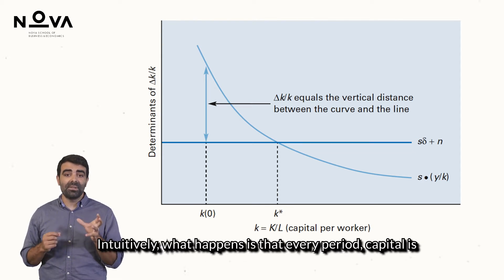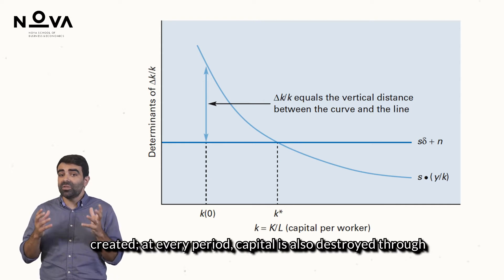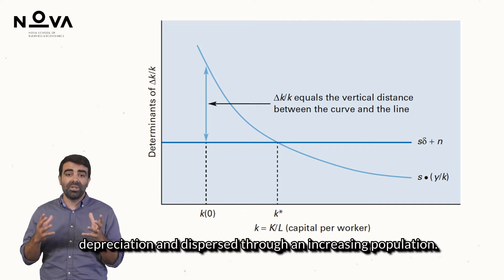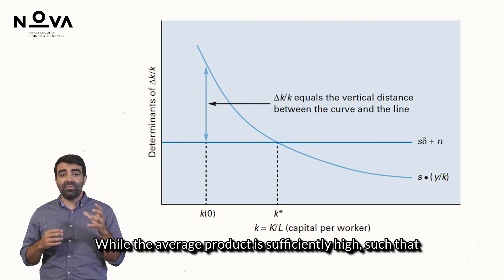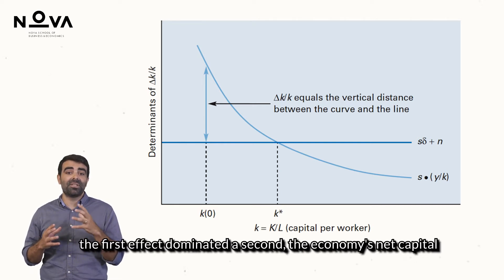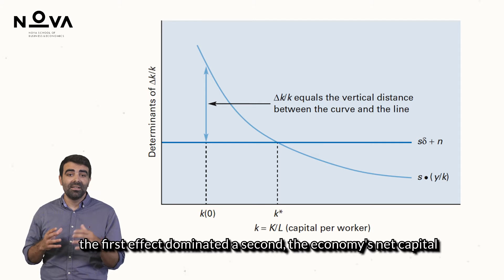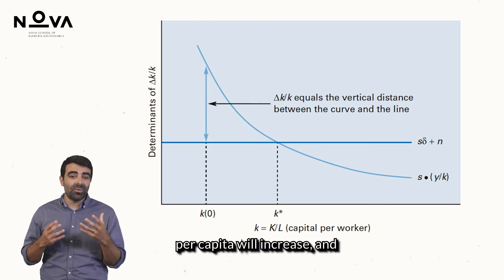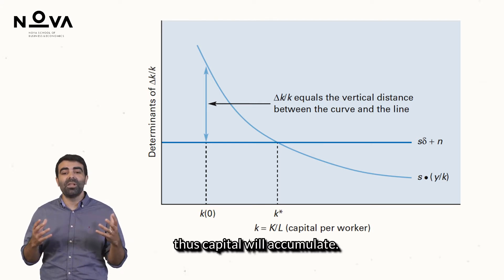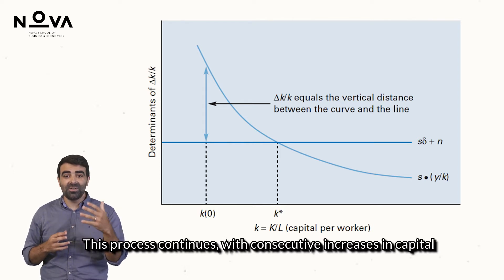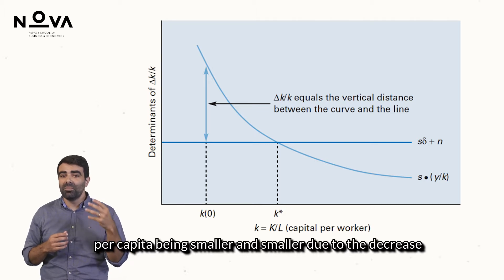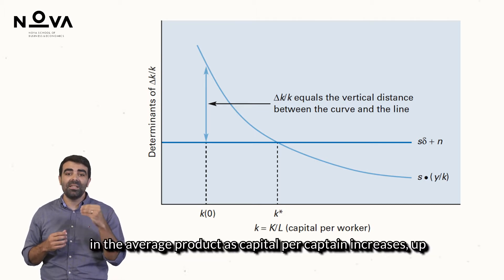Intuitively, what happens is that every period capital is created. At every period capital is also destroyed through depreciation and dispersed through an increasing population. While the average product is sufficiently high, such that the first effect dominates the second, the economy's net capital per capita will increase and thus capital will accumulate. This process continues, with consecutive increases in capital per capita being smaller and smaller due to the decrease in the average product as capital per capita increases.